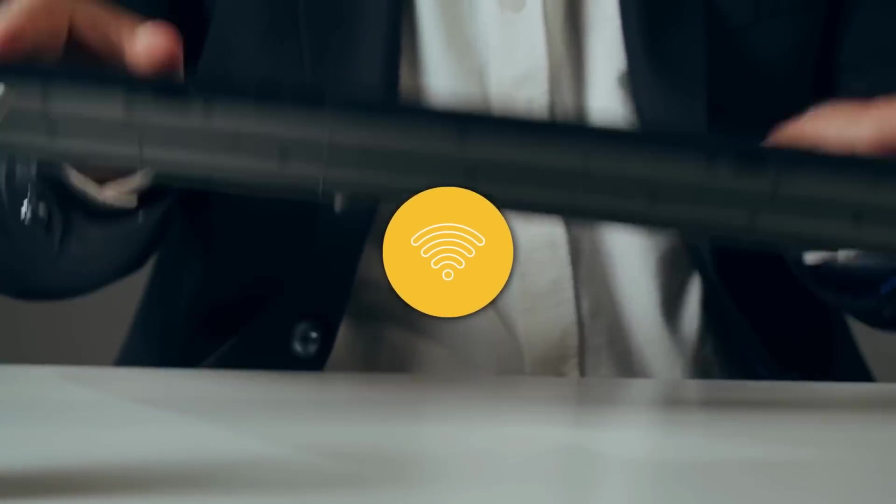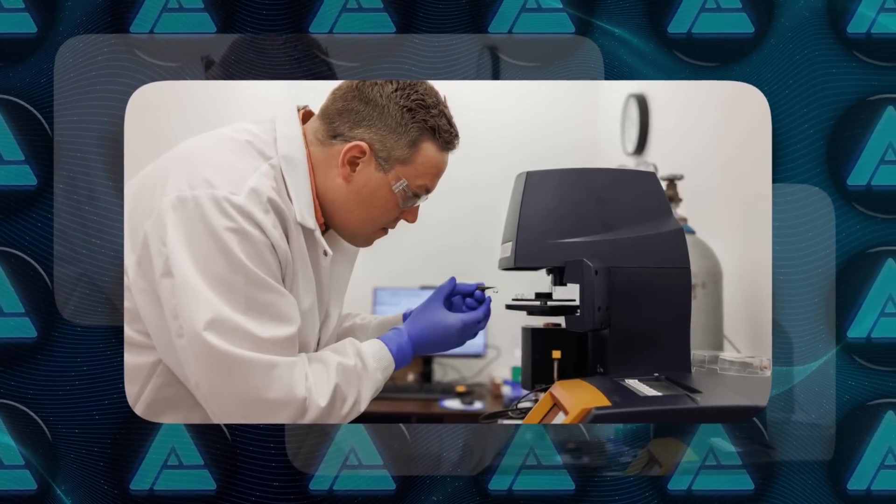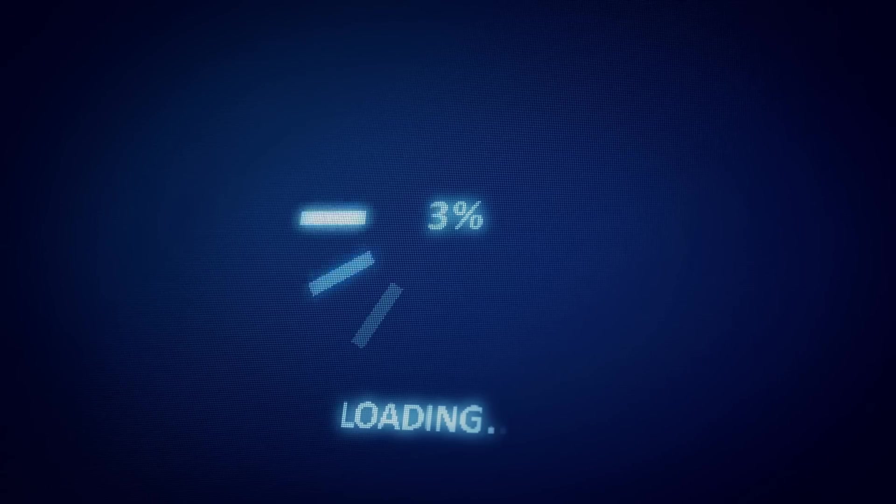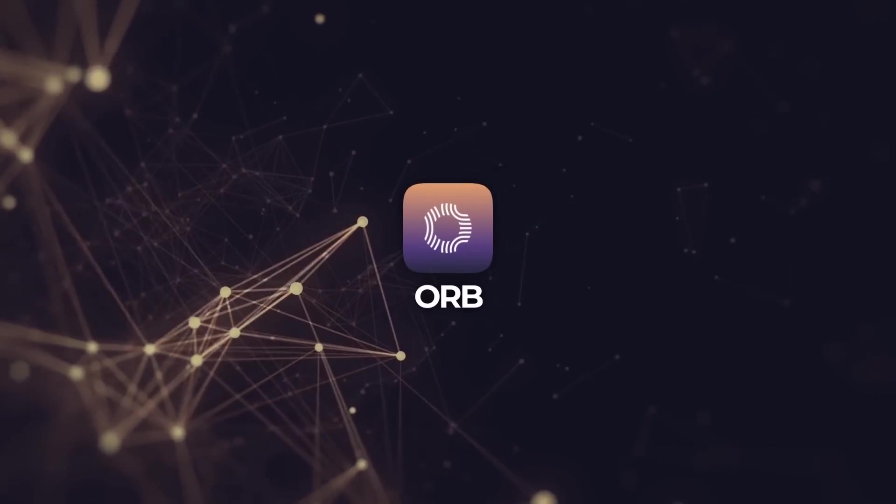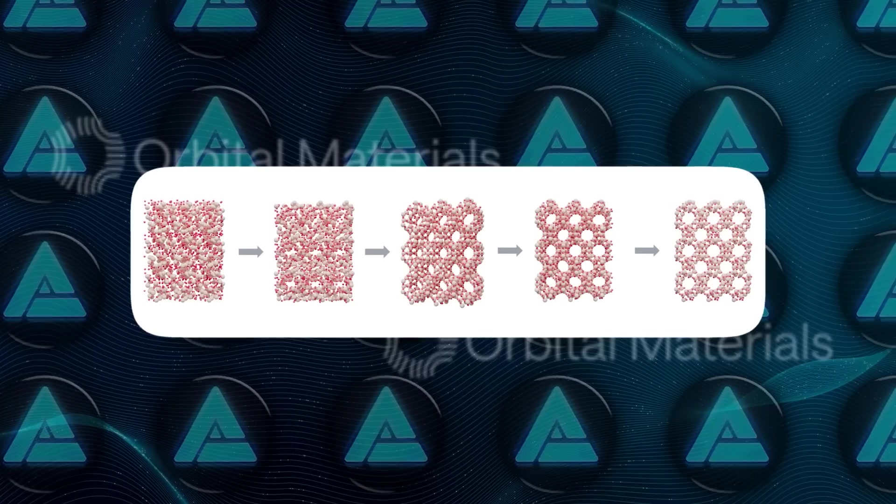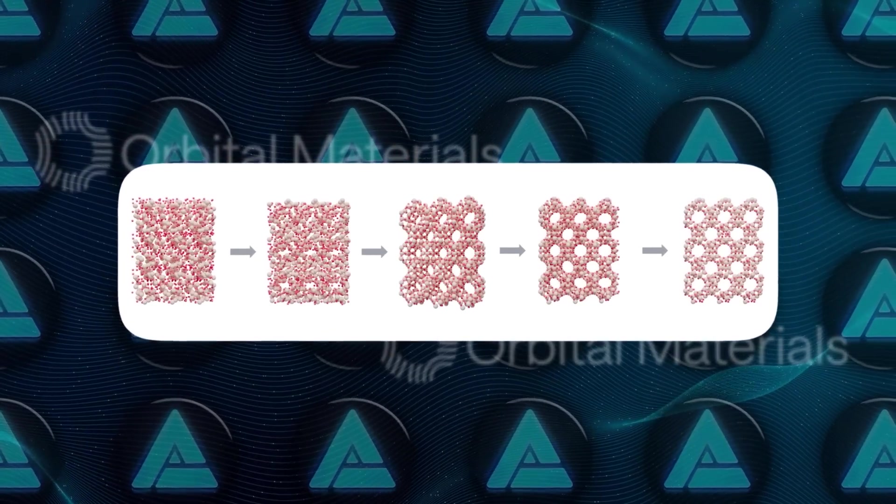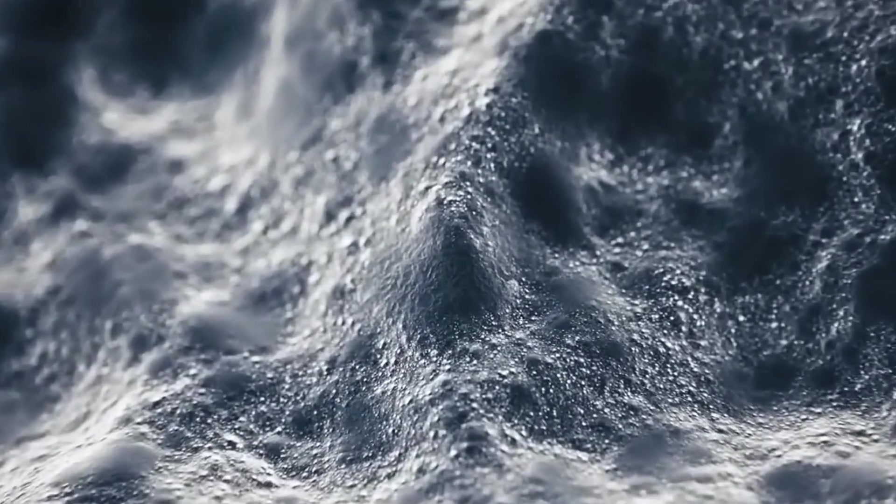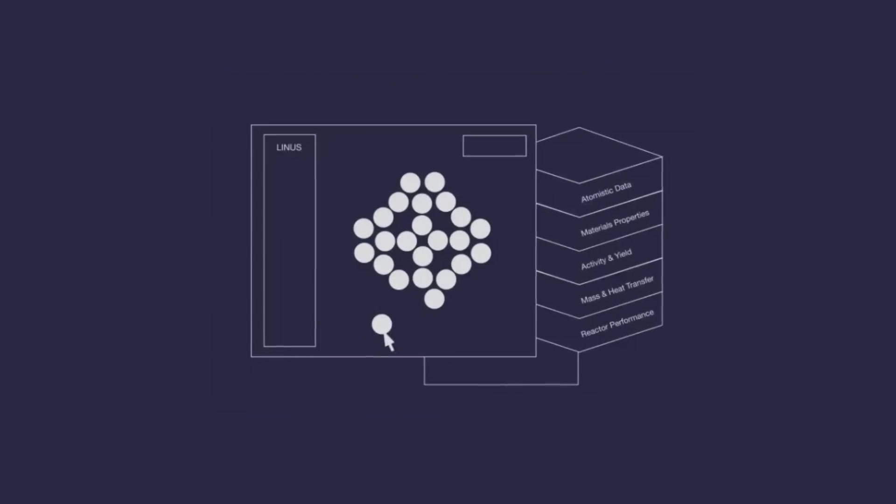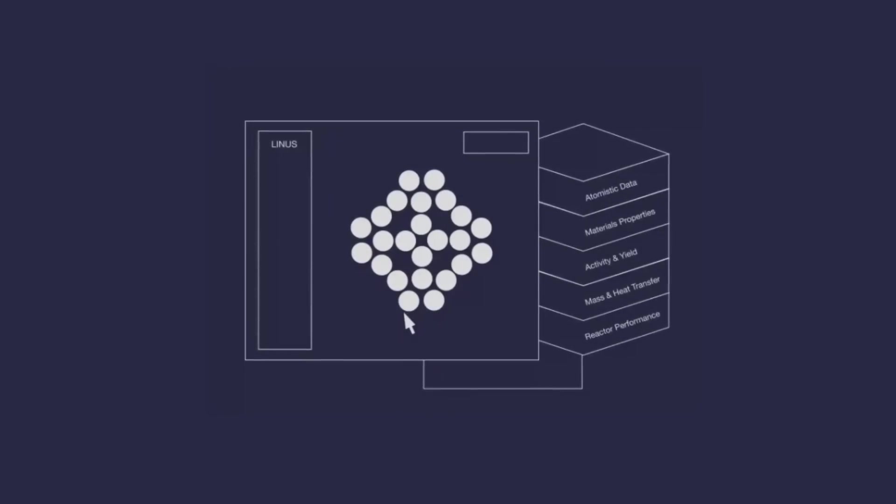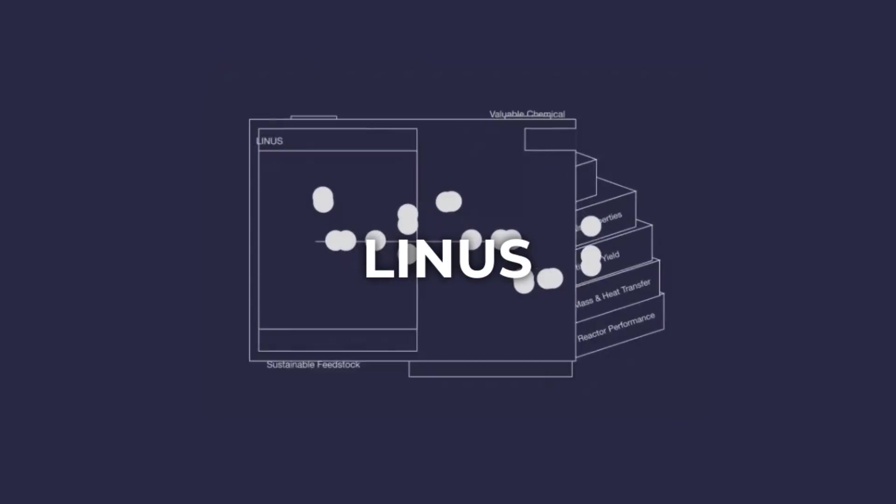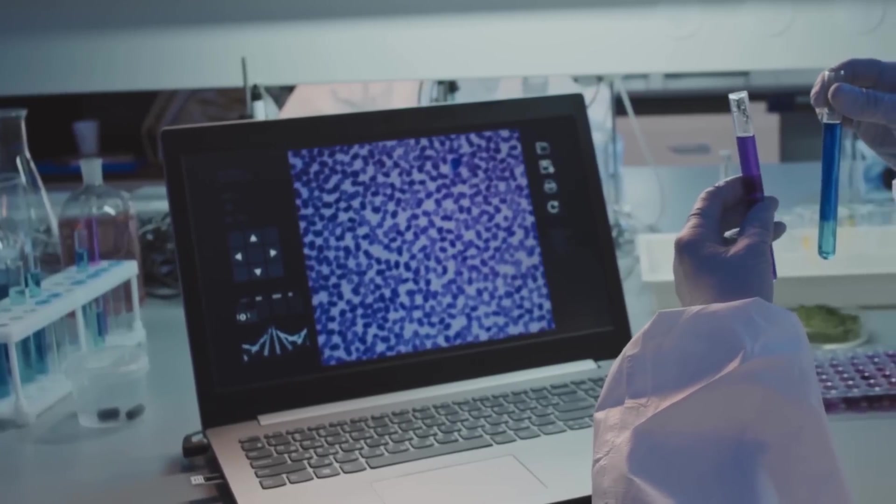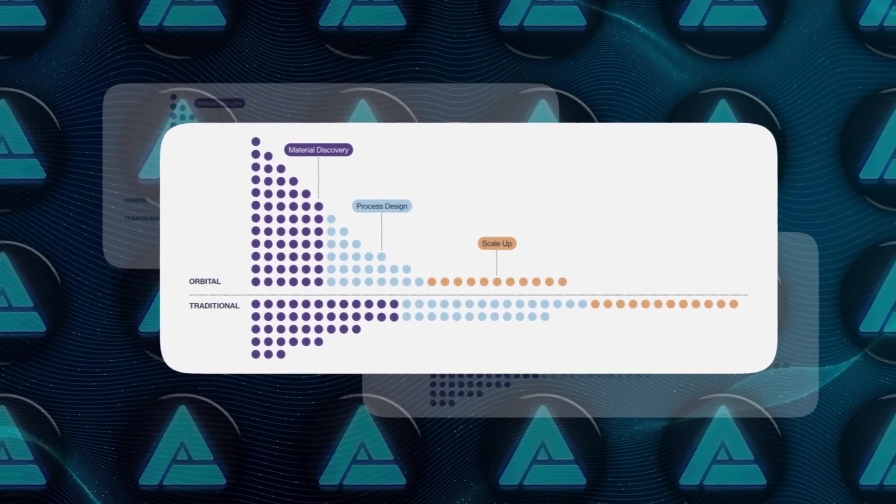And that's where AI comes in, giving us a new way to look at these materials with way more detail, without waiting forever. This brings us to Orb, the model we're talking about today. Built by a company called Orbital, Orb is designed to simulate materials at the atomic level faster and more accurately than anything else out there right now. And get this, it's based on a bigger AI model they've been working on internally called Linus. So basically, they've been fine-tuning this thing for a while now, and it's paying off in a huge way.